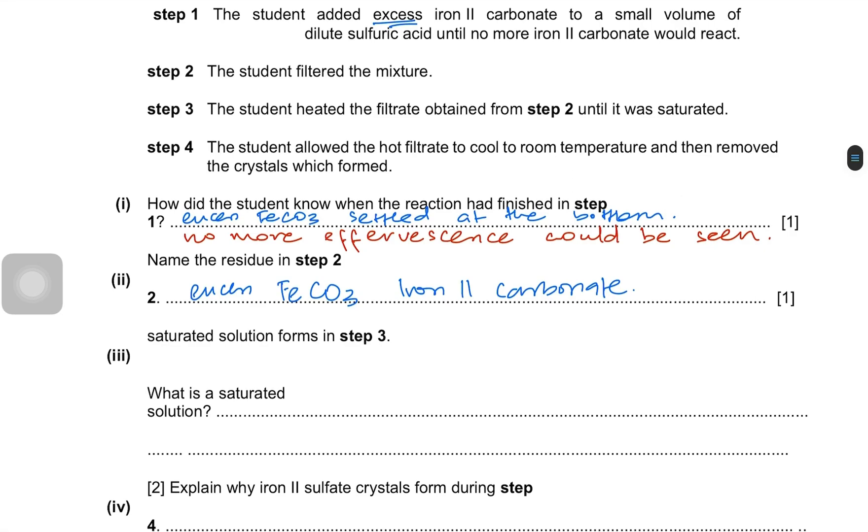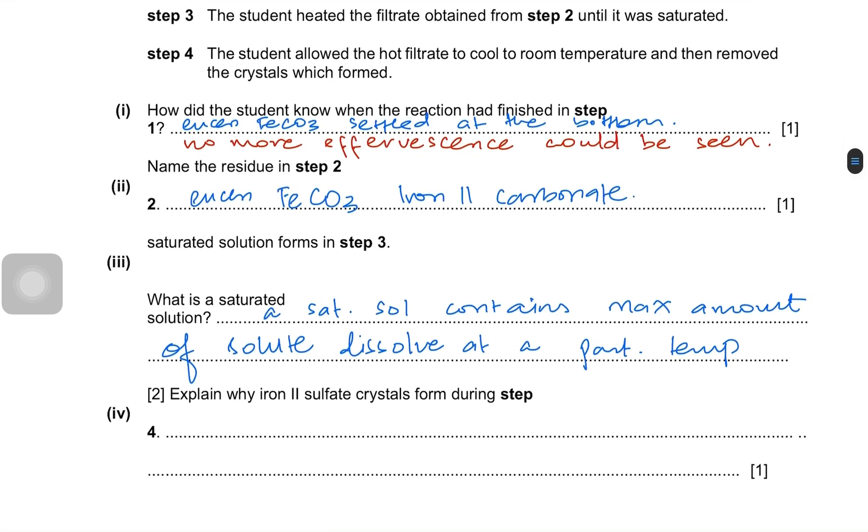A saturated solution forms in step 3. What is a saturated solution? So a saturated solution contains maximum amount of solute dissolved at a particular temperature. So it can't dissolve more solute. Iron 2 sulfate crystals form during step 4. So when a saturated solution is cooled, the solubility decreases. And when solubility decreases, what happens to the extra solute? It forms a crystal. So as temperature drops, solubility decreases, and the solute forms crystals.